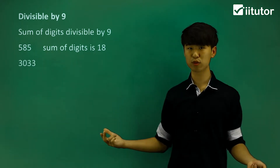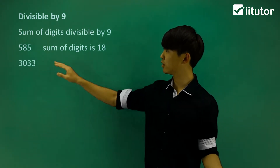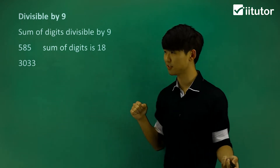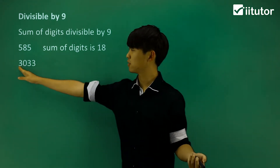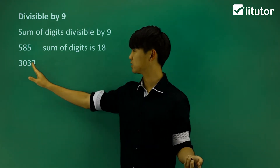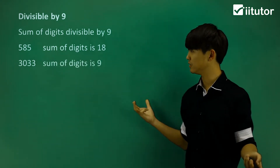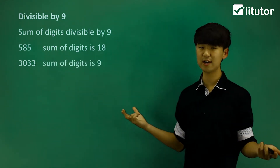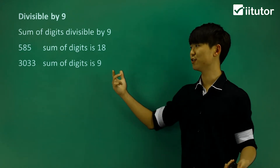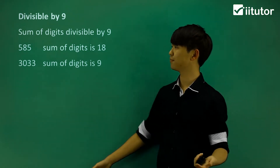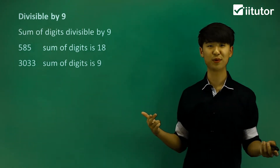Now another example: 3033. We're only considering the sum of the digits. So in this case, 3 plus 0 plus 3 plus 3 gives me the sum of digits of 9. And 9 is divisible by 9, so the whole number 3033 is also divisible by 9.